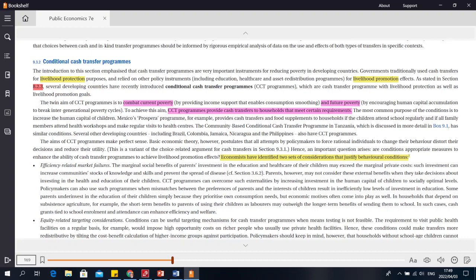The 9.3.2 talks about conditional cash transfers. You just have to know the definition and the basic idea of that. It's about livelihood protection but also livelihood promotion. That's the two goals of social security. How can a conditional cash transfer program promote livelihood promotion?